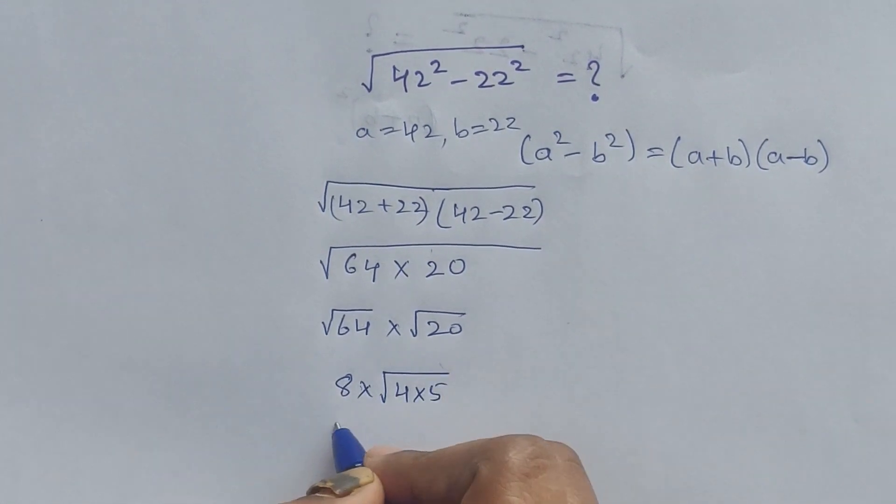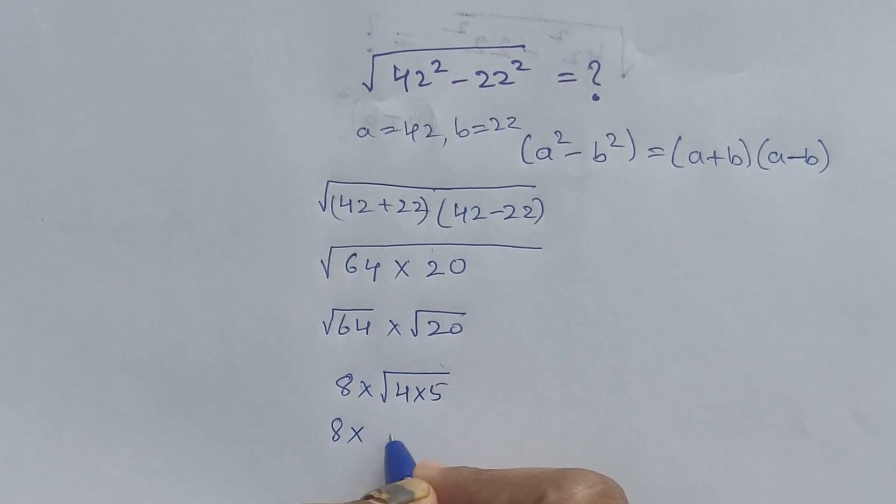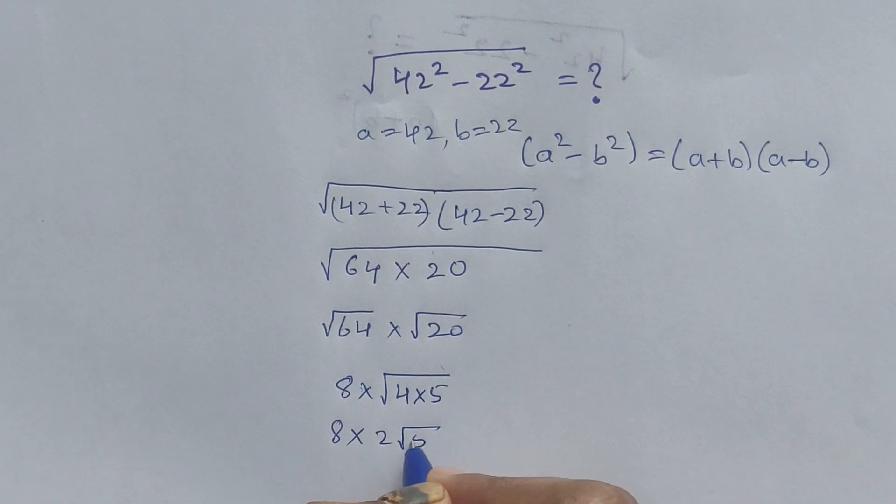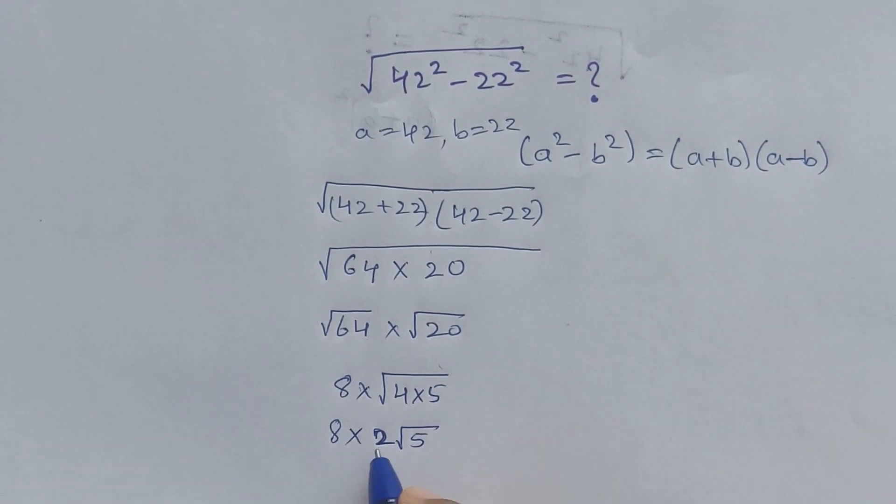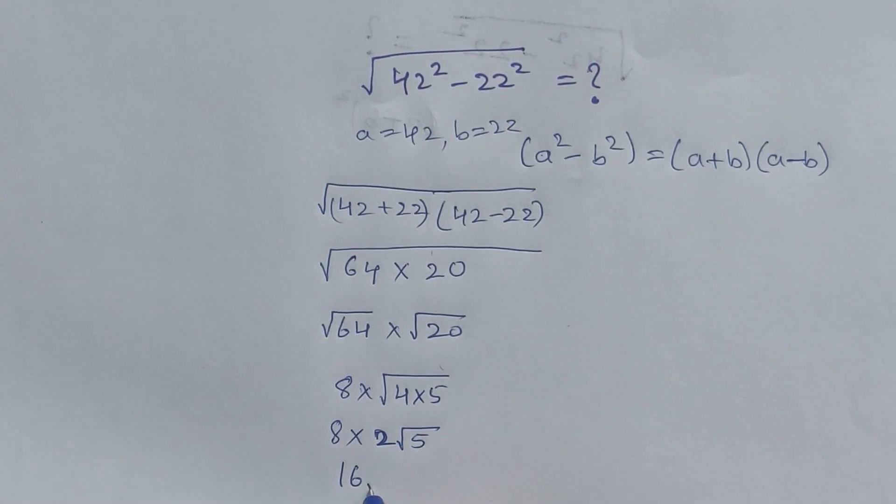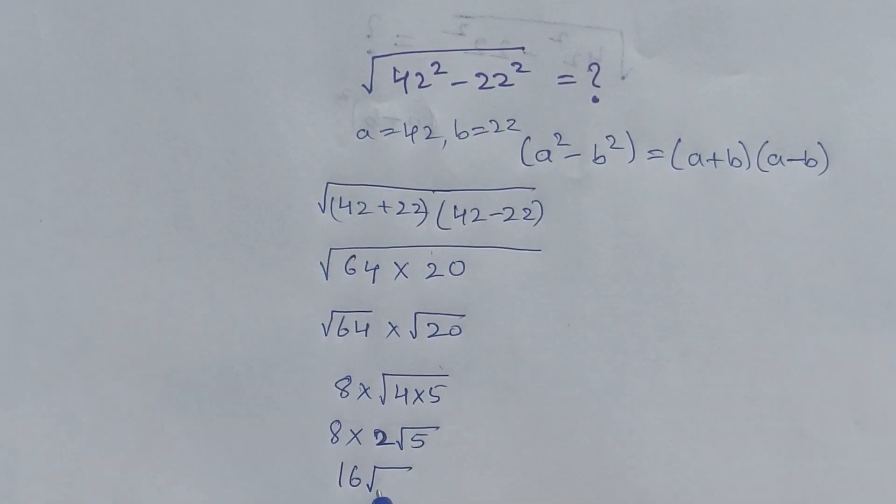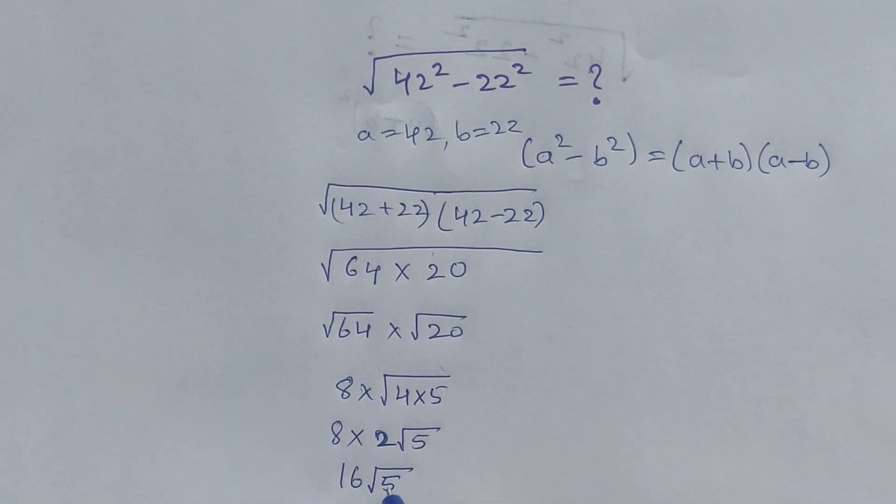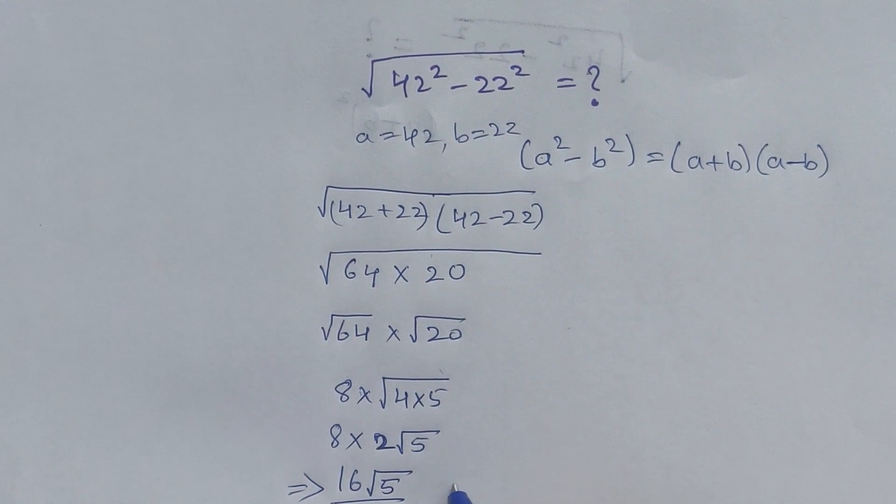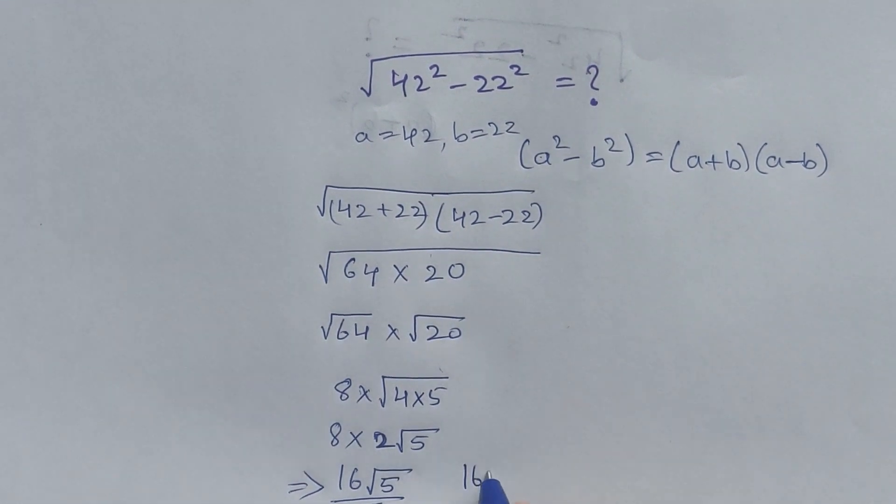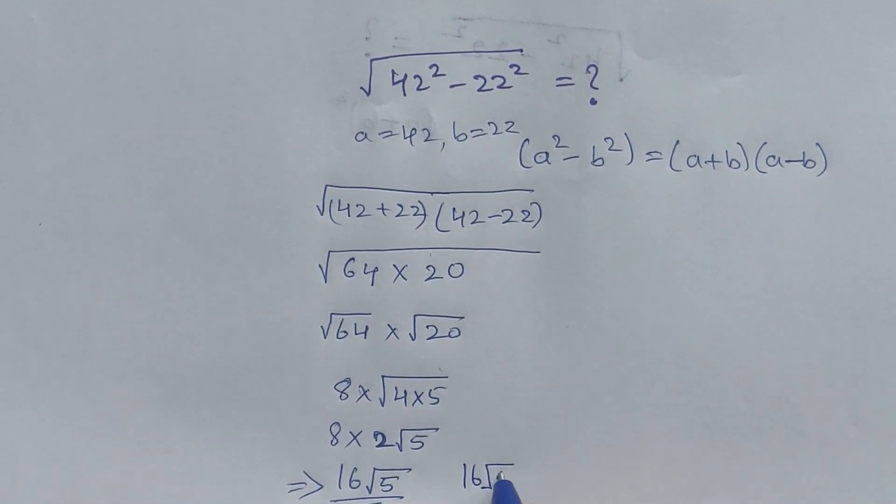So 8 times square root of 4 times square root of 5. Square root of 4 is 2 times square root of 5, and 8 times 2 is 16. So the final answer is 16 square root of 5.